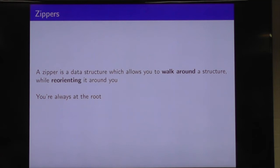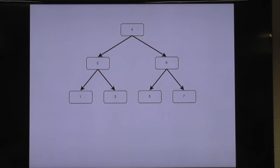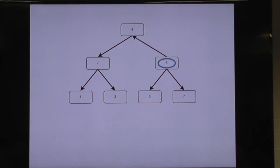Let's see what that would look like with diagrams before we jump into code. Here's the same tree, and we're going to perform the same modifications — but zipper style. I'm going to use a blue circle to represent the current focus. We're interested in replacing the 5 and the 7, so we want to walk down into the right subtree. Now we're focused on the 6. Walking down to the 6, we've actually flipped around the arrow — this used to be an arrow from the 4 down to the 6, but now we know about the 4 above us rather than it knowing about us.